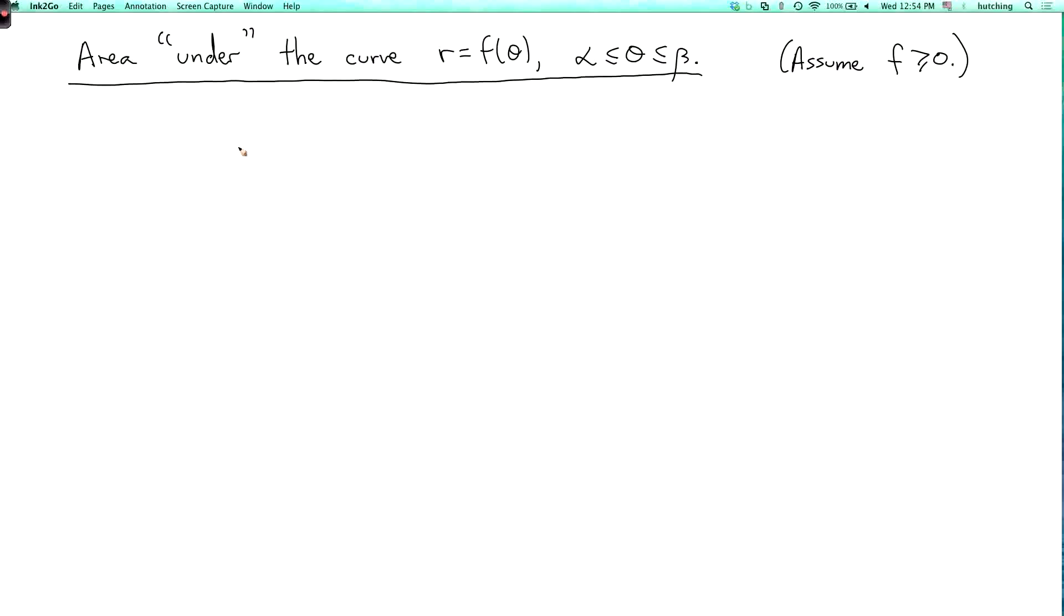I now want to explain how to find the area which is, so to speak, under the polar curve r = f(θ) as θ goes from α to β. And to avoid confusion with negative values of r, I'm going to assume that f is always greater than or equal to zero.